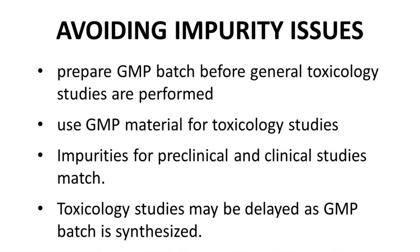An easy way to avoid having impurities pose a problem as a compound transitions from discovery to development is to prepare the GMP batch of material before toxicology studies are performed. The GMP batch must be large enough to cover the needs of both preclinical safety studies and early clinical trials. Being from a common batch, the impurity profile will match across all studies. Of course, this approach does require advanced planning, and the general toxicology studies may be delayed as transitioning to a GMP-compliant process may require additional time. The challenge of changing impurity identities and amounts is related to how the lead is synthesized, which affects potential impurities and safety risks.